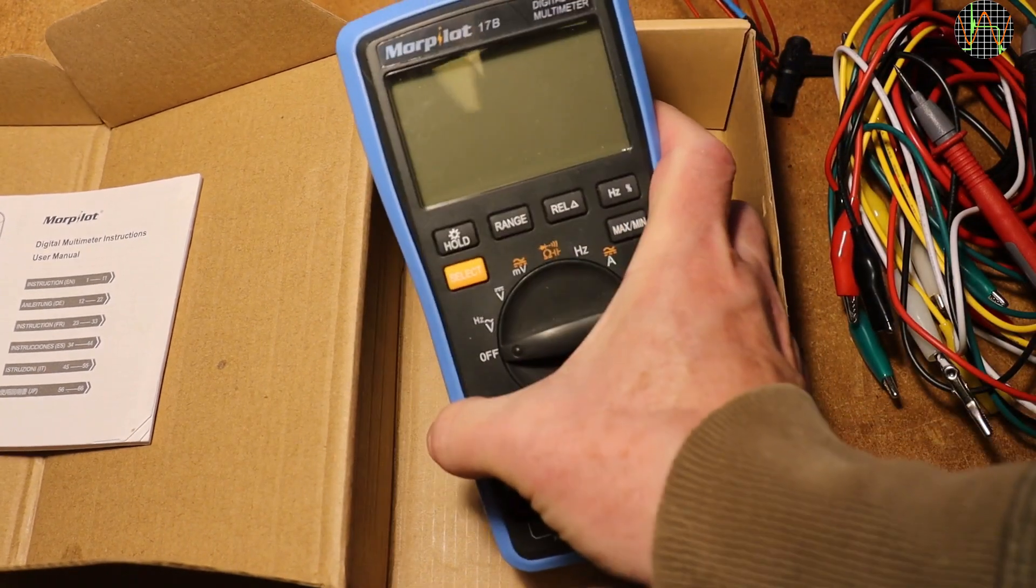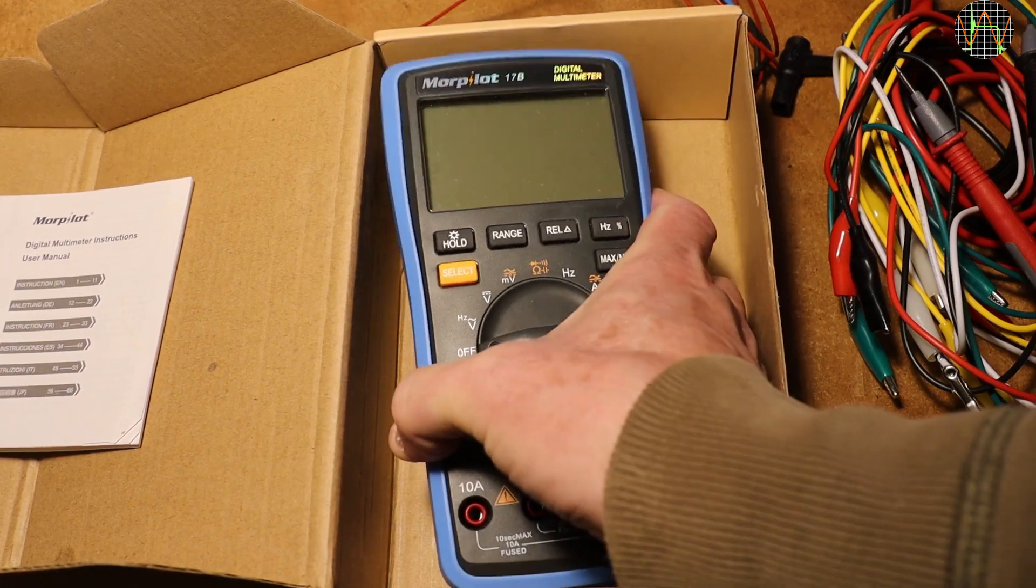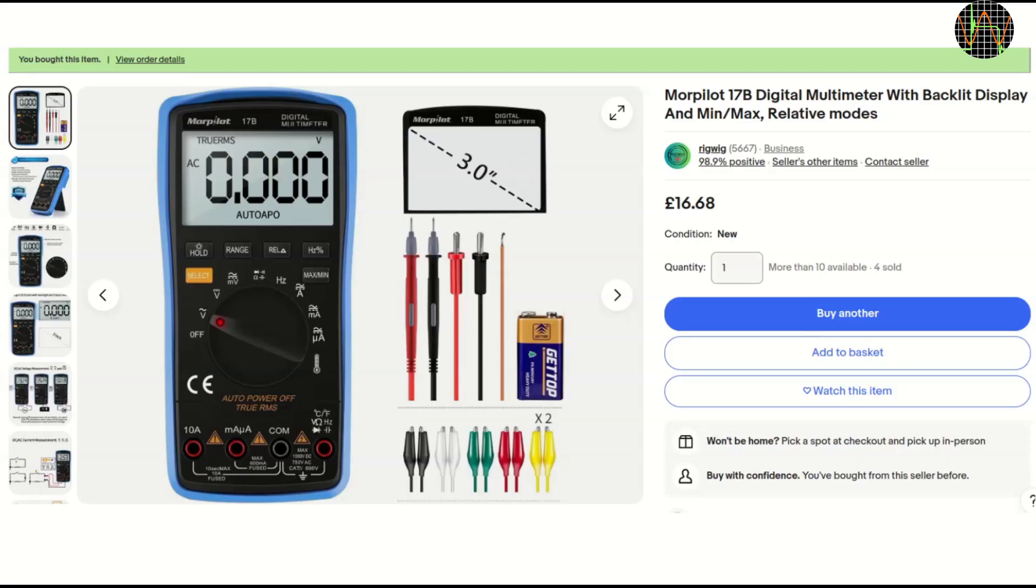This large meter and especially its screen is really quite the opposite of the tiny Grenova. You can buy this meter from many places. I got mine from eBay for less than £17, about $21.50.